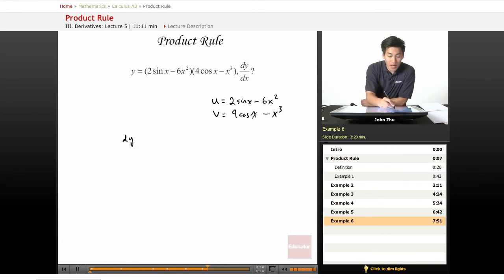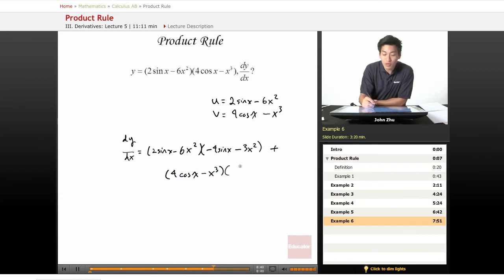So dy dx in our case is u, 2 sine of x minus 6x squared, times dv dx, which is negative 4 sine of x minus 3x squared, plus v, which is 4 cosine of x minus x cubed, times du dx, which is 2 cosine of x minus 12x.